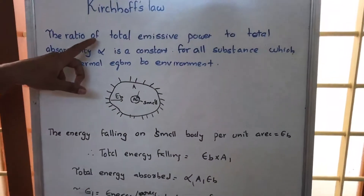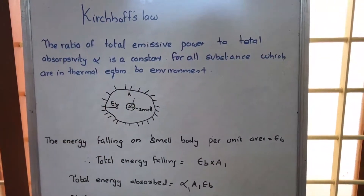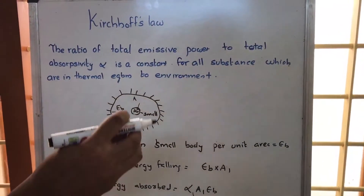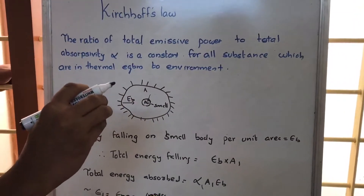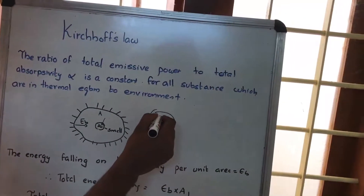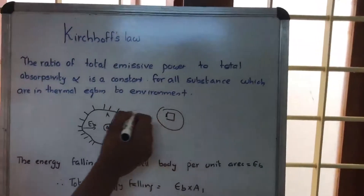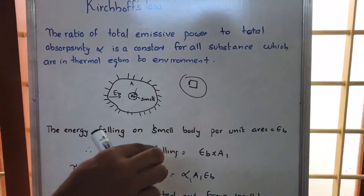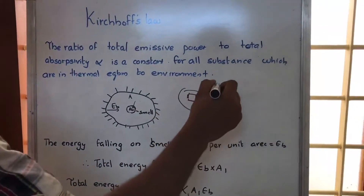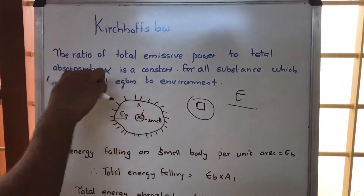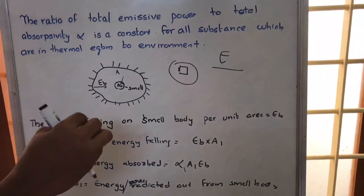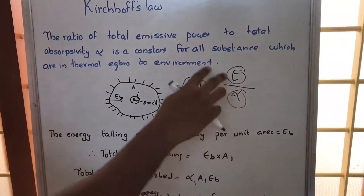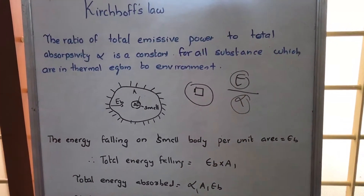In Kirchhoff's law, we have the ratio of total emissive power. Emissive power is actually the energy that can be radiated by a surface per unit area. So if you have a surface with a unit area, the energy radiated out by that unit area is called emissive power. The ratio of emissive power to absorptivity for different materials is the same.